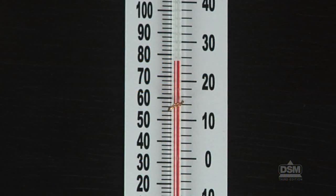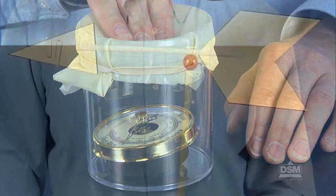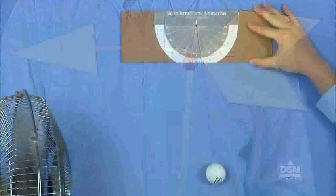Students observe and compare temperatures in Fahrenheit and Celsius, and take thermometer readings twice a day. They then investigate air pressure and barometers, and construct wind vanes and record wind direction and wind strength.